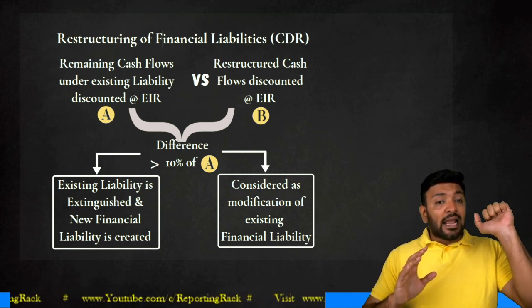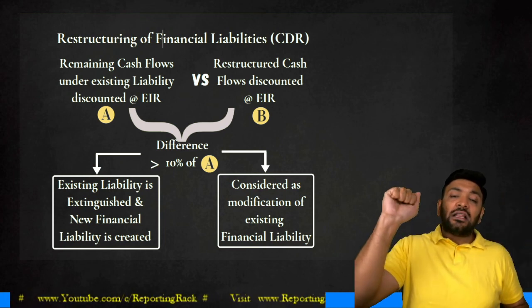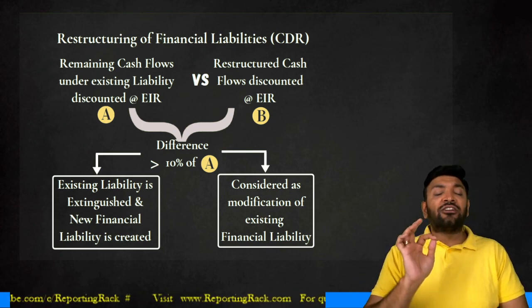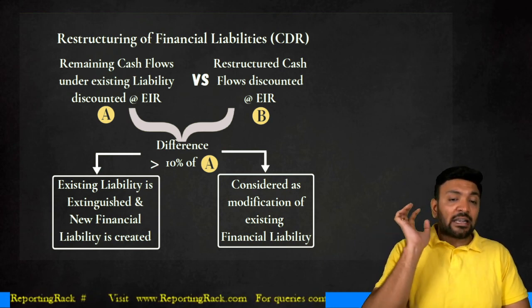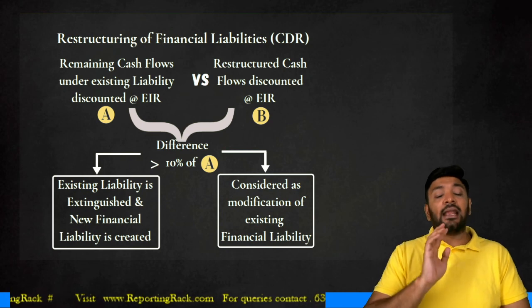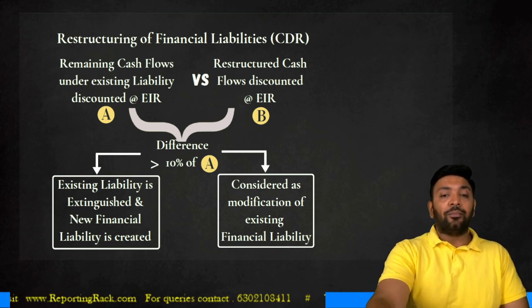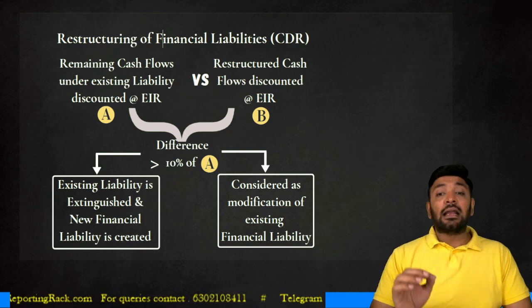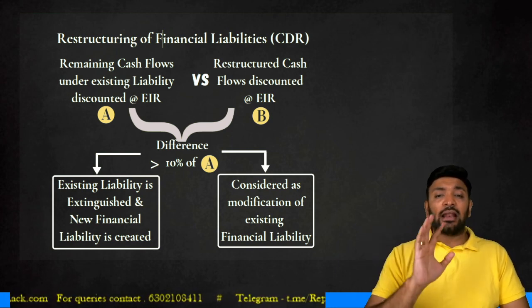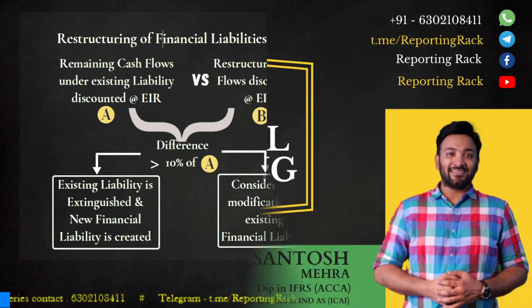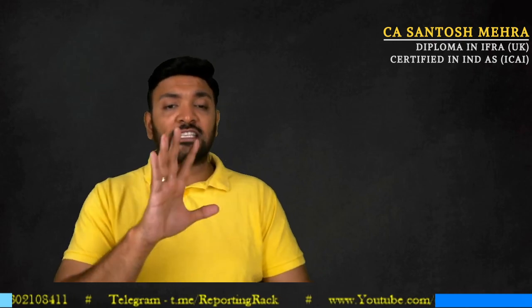Both amortized costs — Part A (existing loan discounted at EIR) and Part B (restructured loan discounted at EIR) — are compared. If the difference is greater than 10% of Part A, treat it as a fresh liability. If less than or equal to 10%, treat it as a modification to the existing liability. This brings us to the end of the discussion on Ind AS 32, 107, and 109 — a detailed discussion of financial instruments including financial assets and financial liabilities.